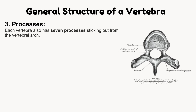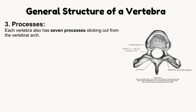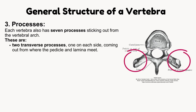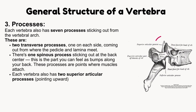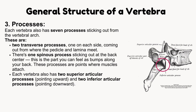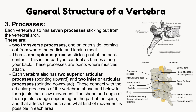Processes of vertebrae. Each vertebra has seven processes sticking out from the vertebral arch: two transverse processes, one on each side, coming out from where the pedicle and lamina meet; one spinous process sticking out at the back center, which is the part you can feel as bumps along your back — these processes are points where muscles attach; two superior articular processes pointing upward; and two inferior articular processes pointing downward. These connect with the articular processes of the vertebrae above and below to form joints that allow movement. The shape and angle of these joints change depending on the part of the spine, affecting how much and what kind of movement is possible in each area.